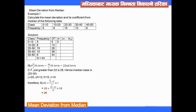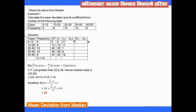We compute the mid value minus the median for each row. After multiplying each deviation by its corresponding frequency, we sum all the f × |m - median| values to get the total, then divide by n to get the mean deviation.